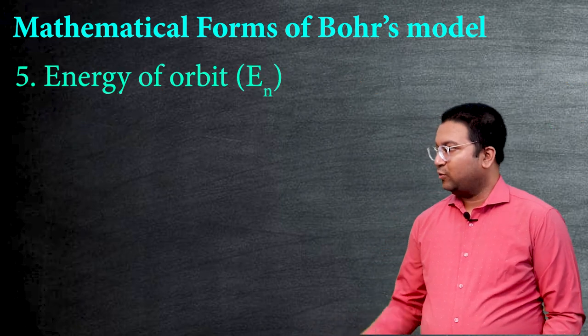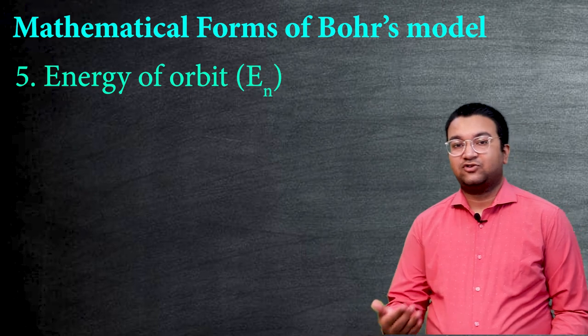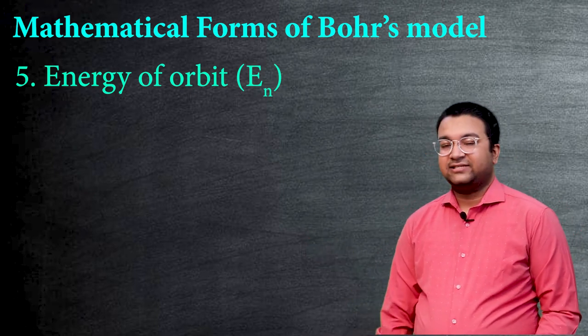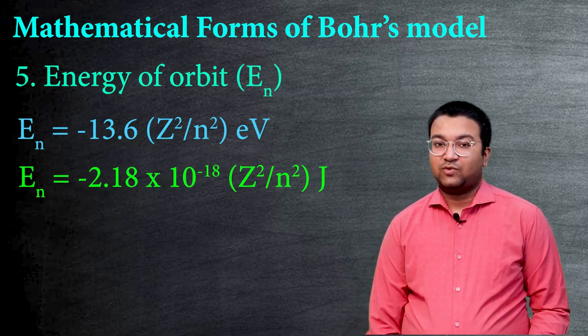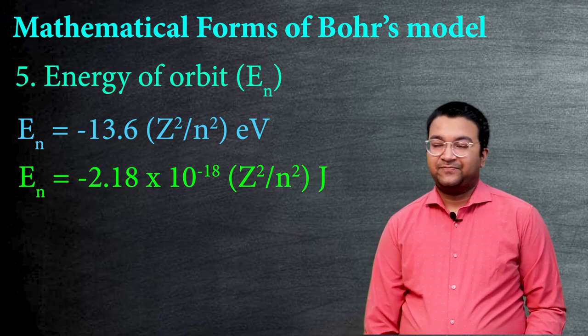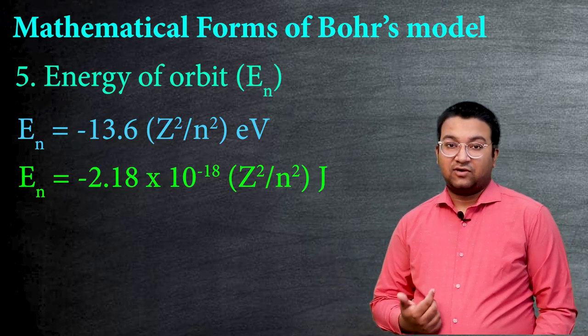And lastly we have Bohr's energy En. That is given in two forms: one in electron volts and second one in joules. The first formula is En equals to -13.6 into Z² upon n², where Z is the atomic number and n is the orbit number. This formula will be used only to calculate the energy in electron volts.